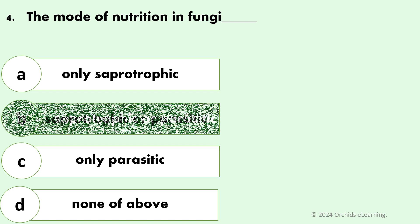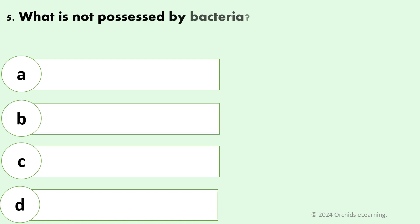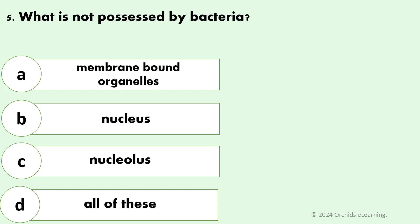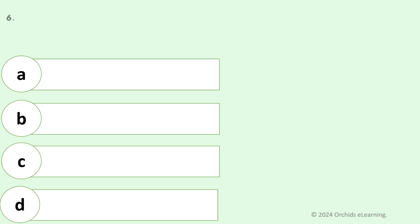Answer: B — Sapotrophic or parasitic. What is not possessed by bacteria? Answer: D — All of these. What does arthropod mean?